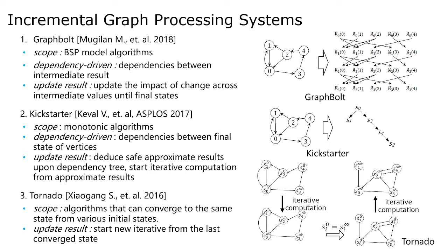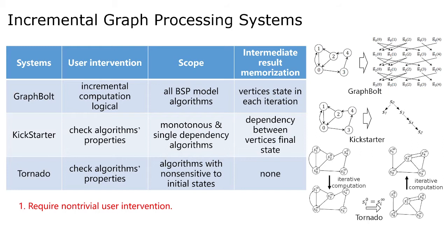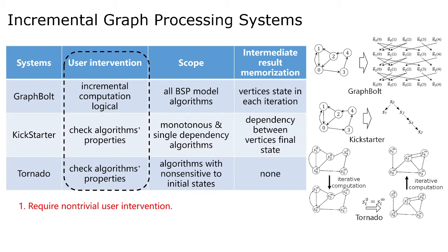However, state-of-the-art incremental graph processing systems have two major drawbacks. First, they require manual user intervention. For example, GraphBot requires manually writing incremental computation logic, while Kickstart, GraphE, and Tornado require checking algorithm properties manually, since they only focus on some specific algorithms.